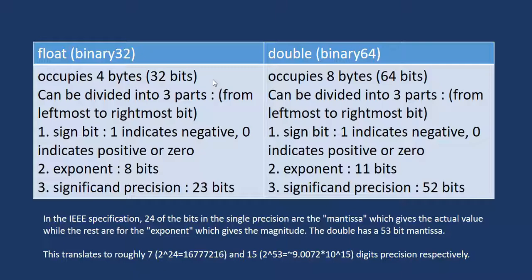Here is a comparison between float and double. In float we get 32-bit binary, in double 64-bit binary. Both can be divided into 3 parts: 1 bit for sign in both cases. Exponent is 8 bits in float but 11 bits in double. Significant precision is 23 bits in float, 52 bits in double.